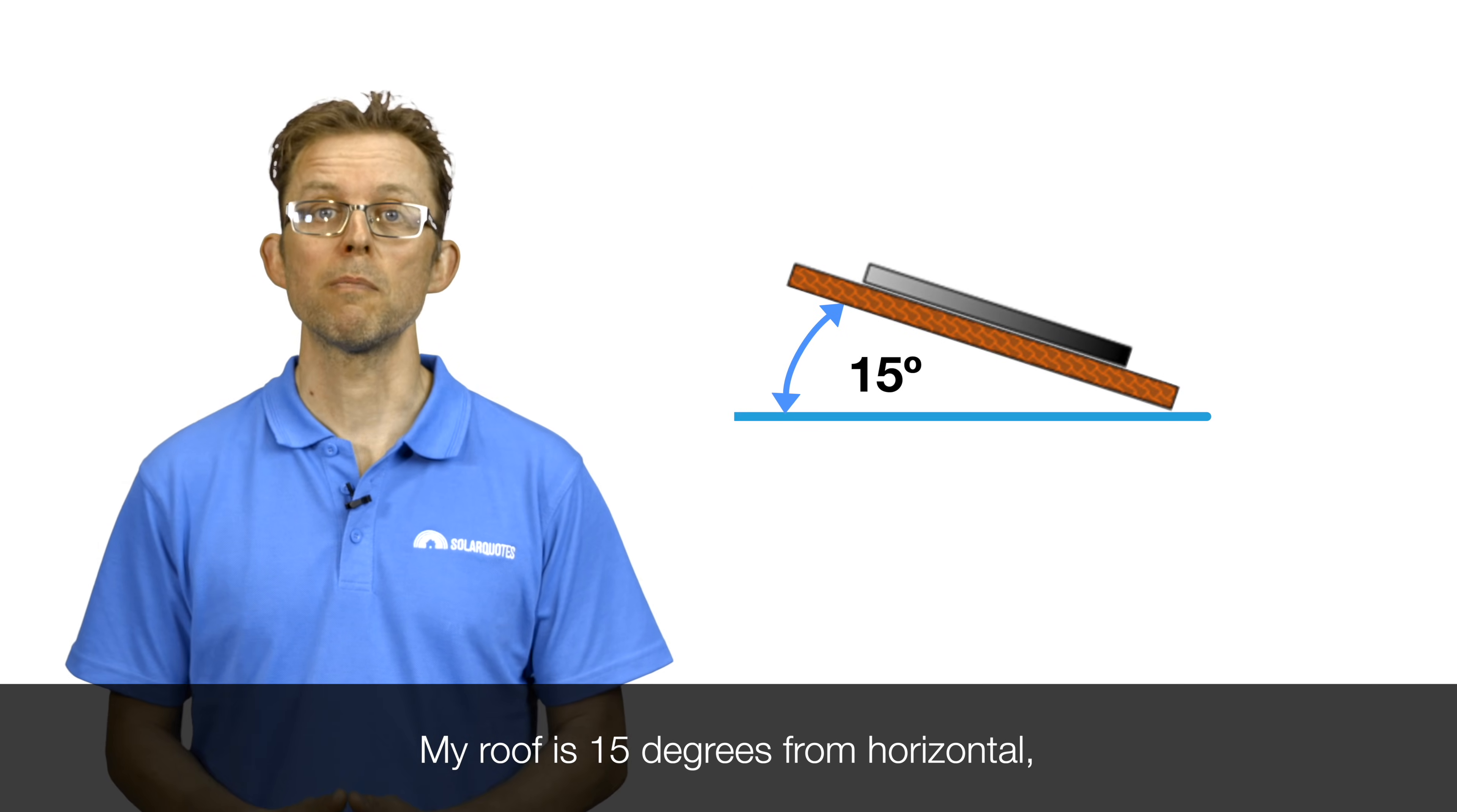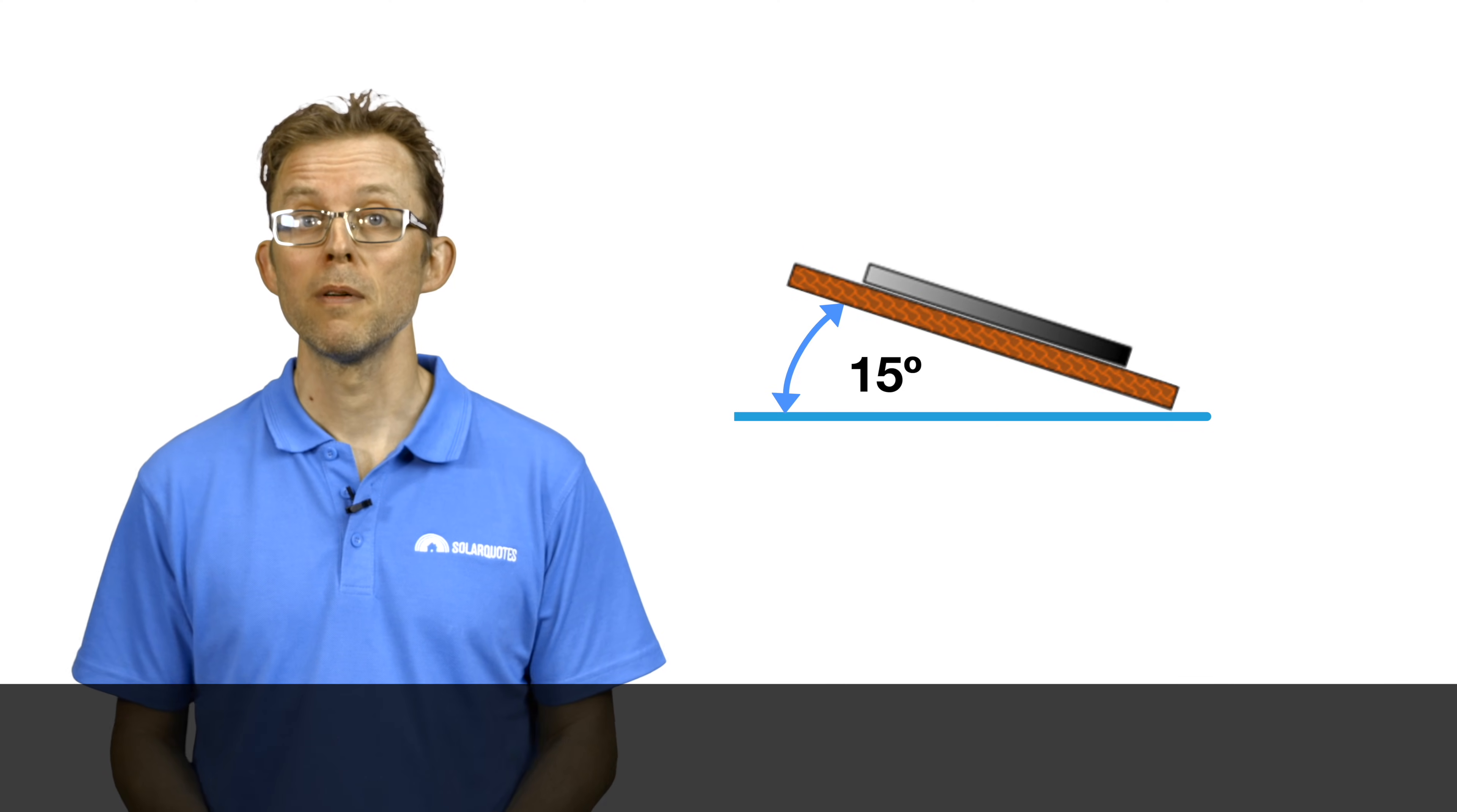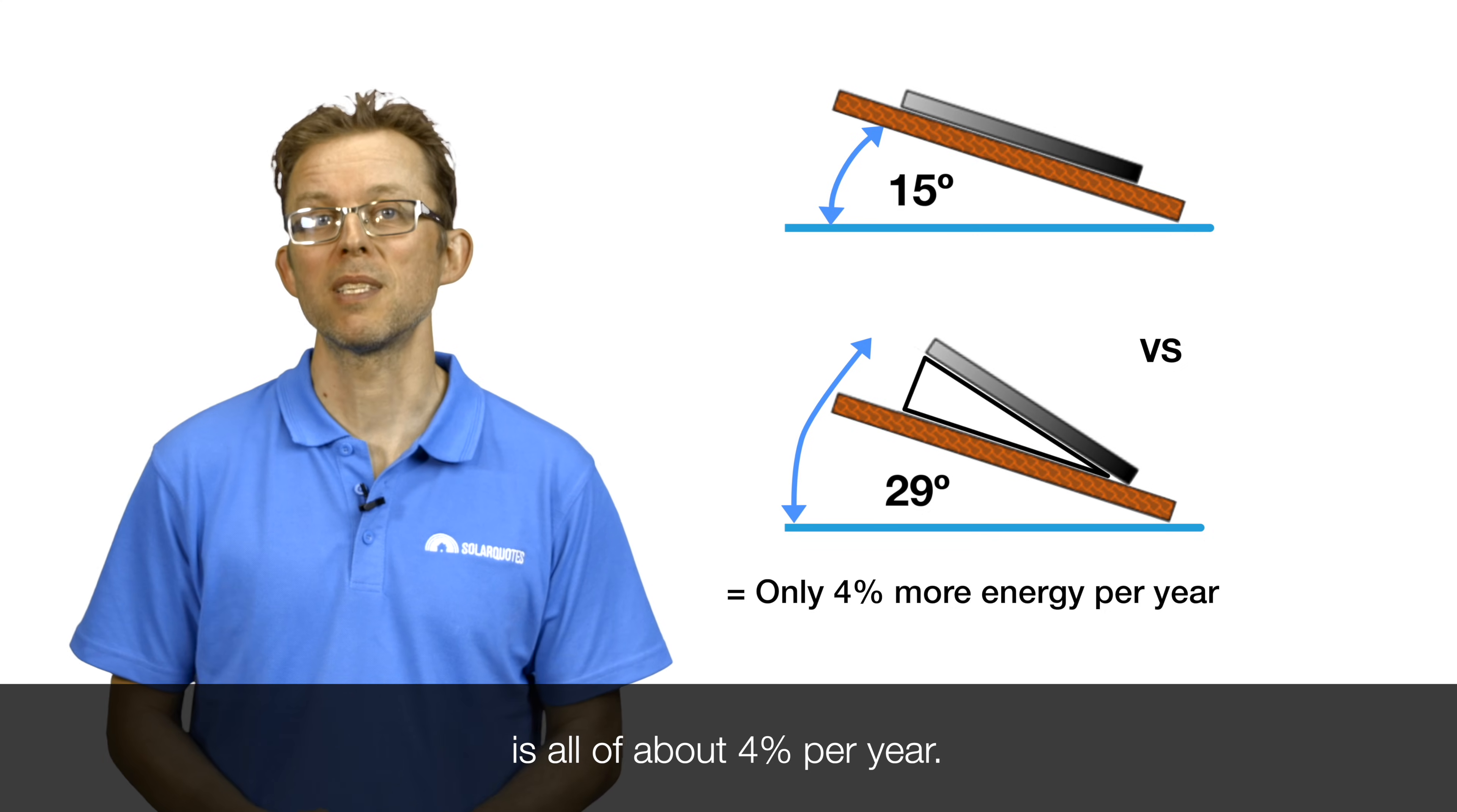My roof is 15 degrees from horizontal. Does that mean I should put tilt frames on my roof? No. I laid them at 15 degrees, flush with my roof, because I did the maths and saw that the difference in energy output between 15 degrees and the ideal 29 degrees is all of about 4% per year.